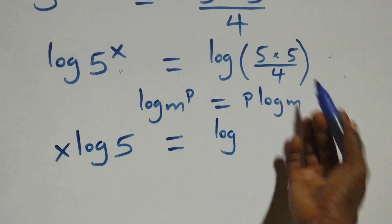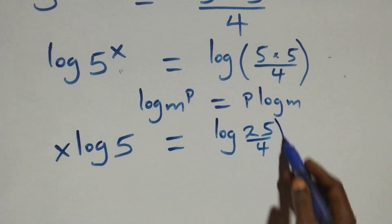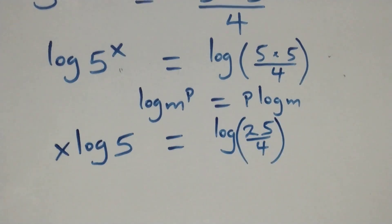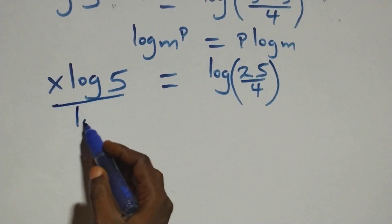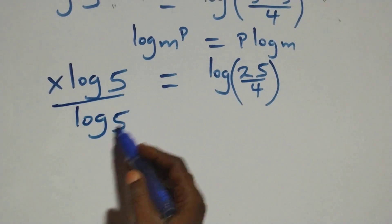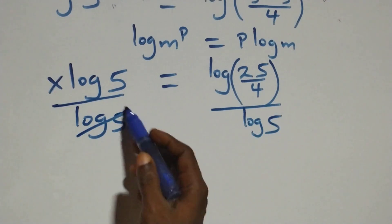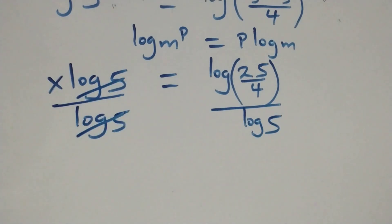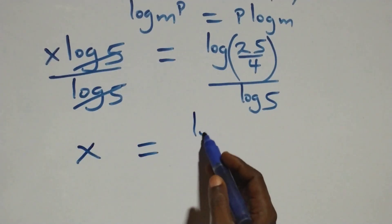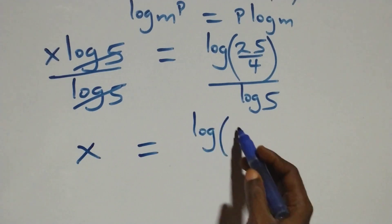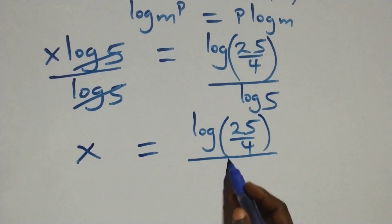We can express 5 times 5 as 25 over 4. The next step: we divide both sides by log 5. Log 5 cancels on the left, and we have x equals log(25/4) all over log 5.